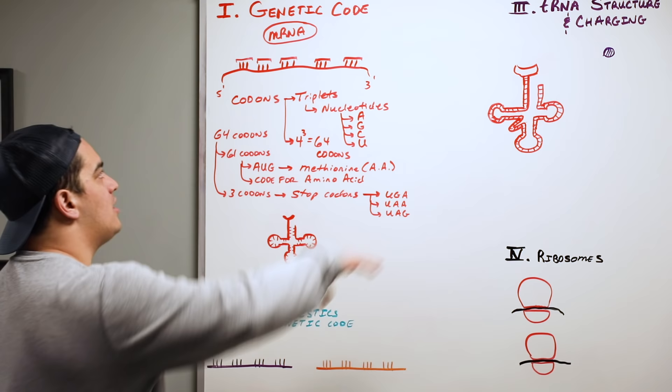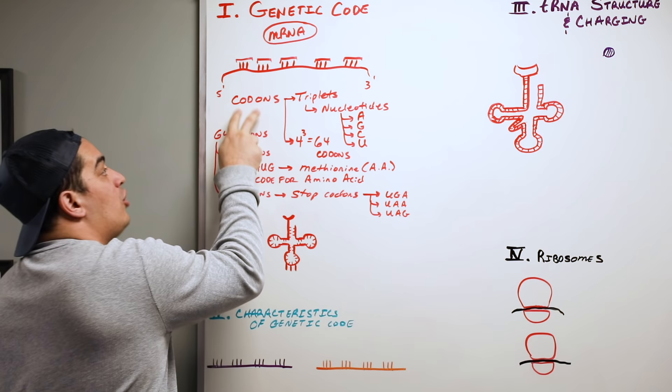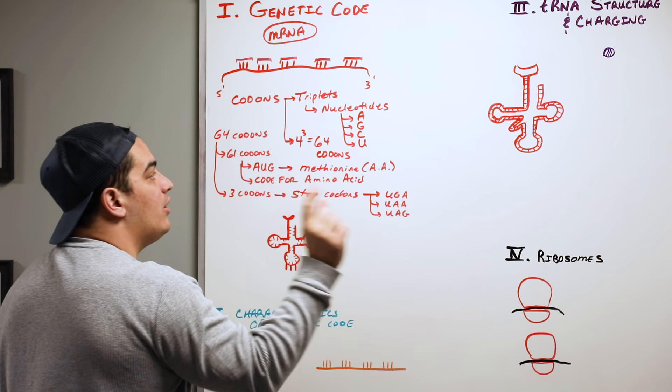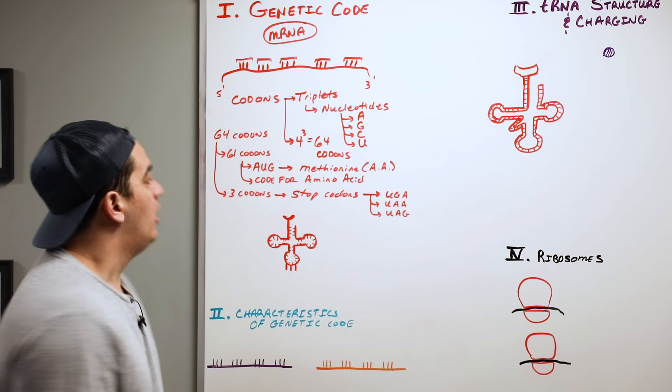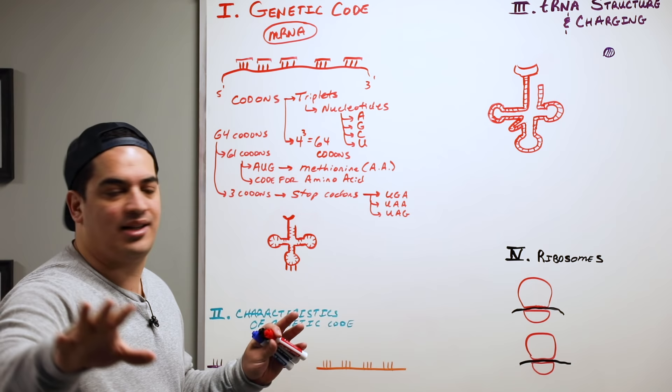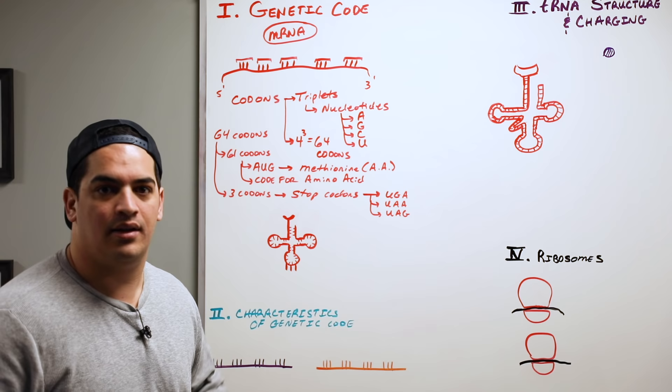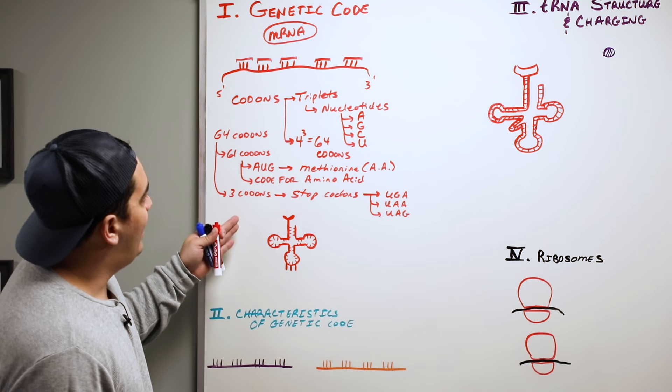The basic concept of the genetic code: mRNA contains codons, codons are made up of three nucleotides containing adenine, guanine, cytosine, and uracil. There are 64 different types of codons. Out of those 64, 61 code for amino acids — you can look those up in the textbook. Three do not code for amino acids; they stop the translation process.